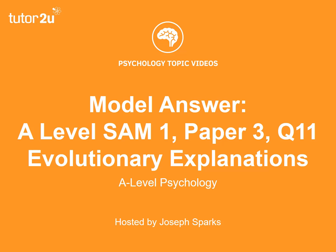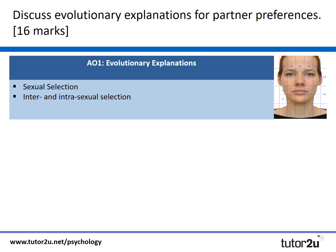Hello and welcome to this psychology topic video where we're going to look at how to write a model answer for the A-level sample assessment material set one paper 3 question 11, which is an essay question on evolutionary explanations for relationships. Here's the question: it says 'discuss evolutionary explanations for partner preference,' and you can see already on the screen I've started to map out what I would put into this particular essay.